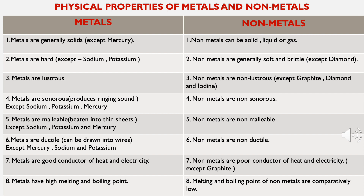Metals are malleable, meaning they can be beaten into thin sheets, except sodium, potassium, and mercury. Non-metals are non-malleable and cannot be beaten into thin sheets. Metals are also ductile, meaning they can be drawn into thin wires, except mercury, sodium, and potassium. Non-metals are non-ductile and cannot be drawn into thin wires.